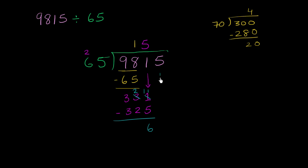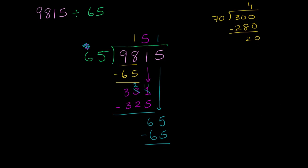But anyway, let's bring down the next digit. Let's bring down the 5. So how many times does 65 go into 65? Well, it goes one time. One times 65, and we can ignore this from a previous step. One times 65 is 65. And then you subtract. And we have no remainder.